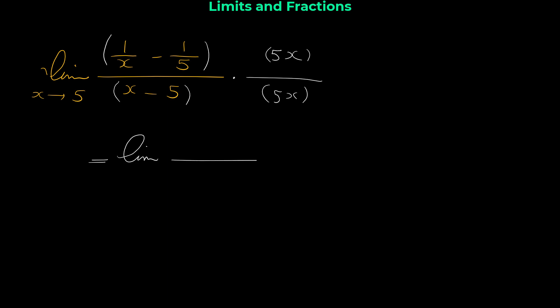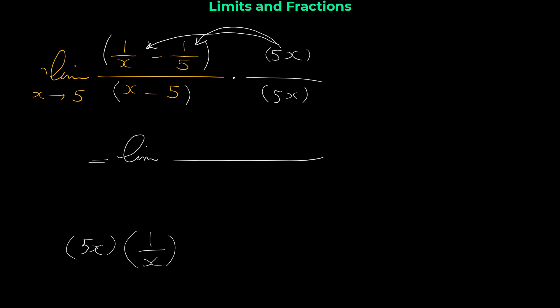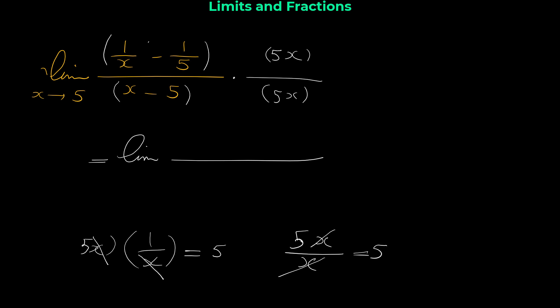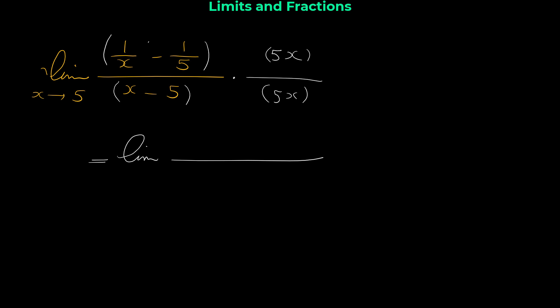If we multiply 5x by 1 over x, we can cancel x from the bottom with x from the top, and it equals 5. So by multiplying 5x by 1 over x we get only 5, so the numerator starts with 5 minus...